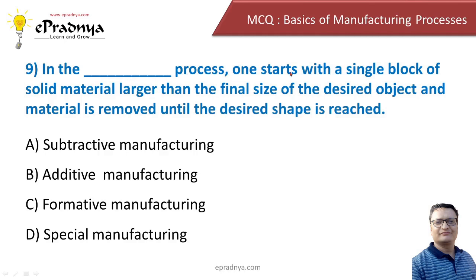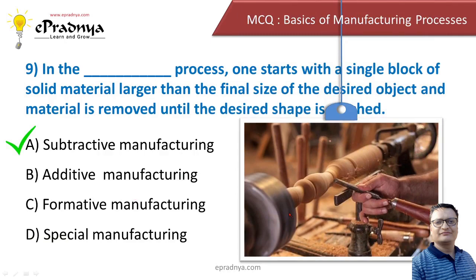In the ___ process, one starts with a single block of solid material larger than the final desired object and removes material until the desired shape is reached. Options: subtractive manufacturing, additive manufacturing, formative manufacturing, and spatial manufacturing. The correct answer is subtractive manufacturing. For example, in wood turning on a bench lathe, material is removed from a wood stock to get the desired shape — we are subtracting material from the starting block to get the final product.